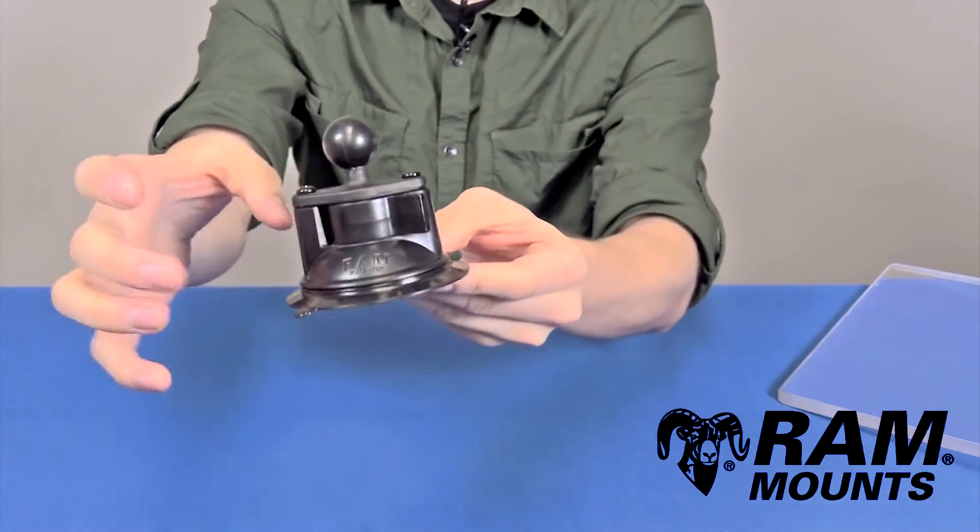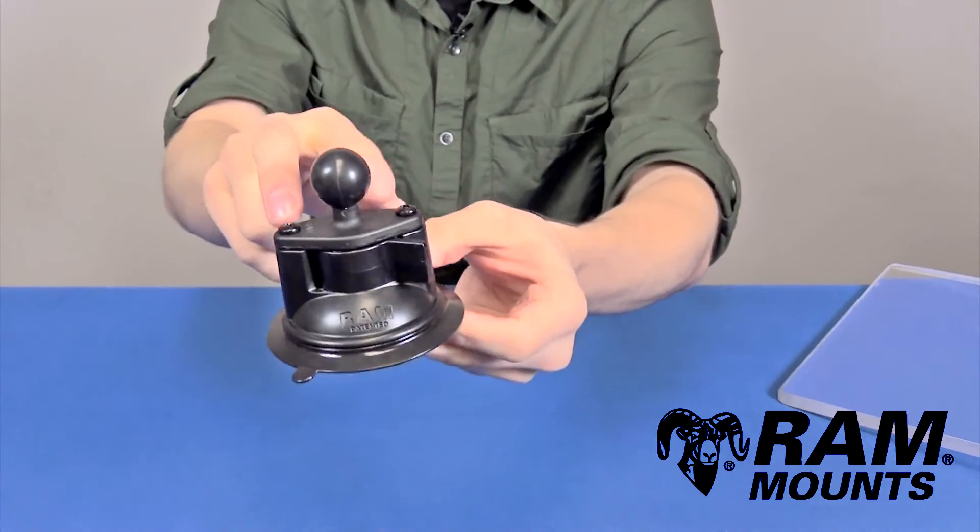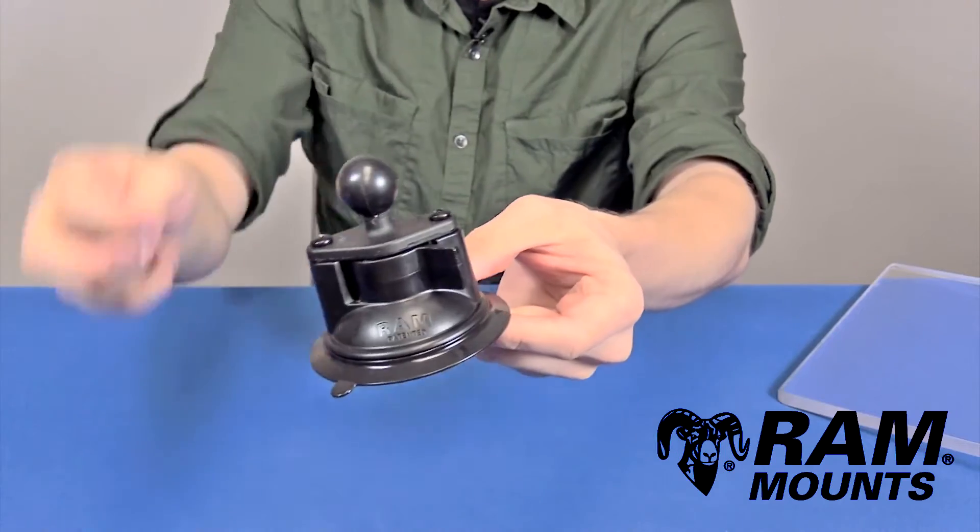This has a high-strength composite housing, and then a marine-grade aluminum plate and a 1-inch rubber ball. The aluminum plate mounts to the suction cup using two provided sheet metal screws that tap into the plastic.